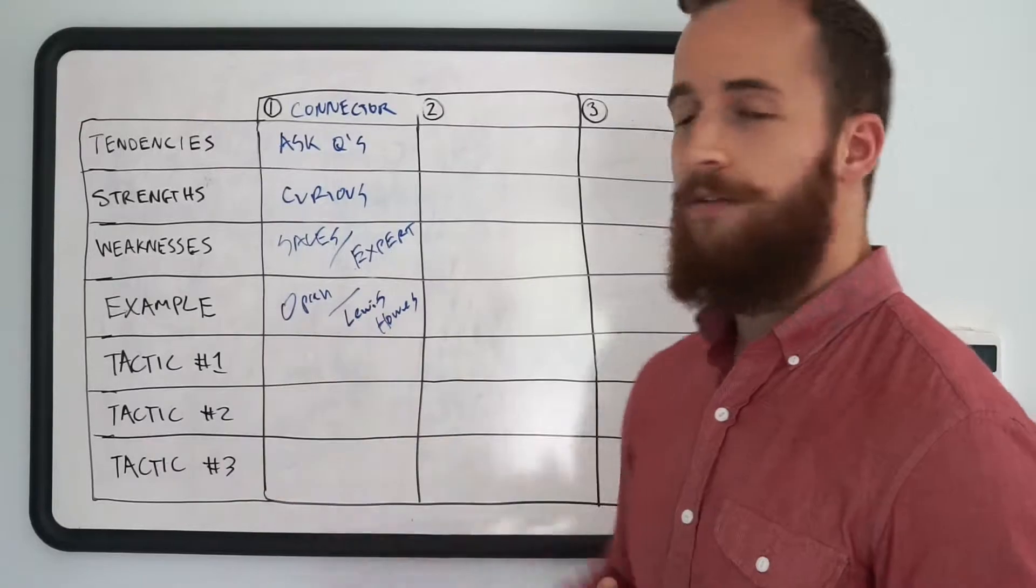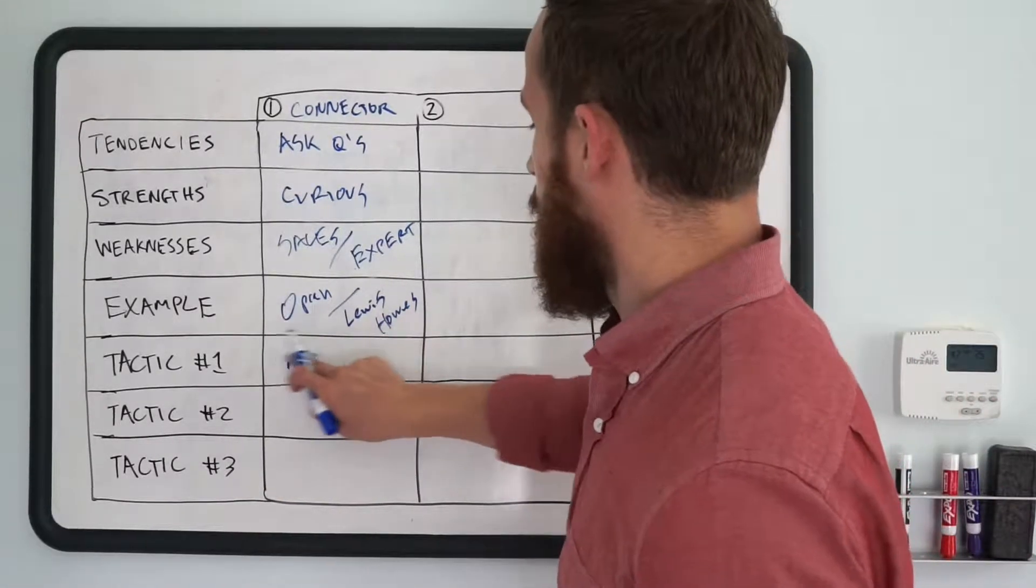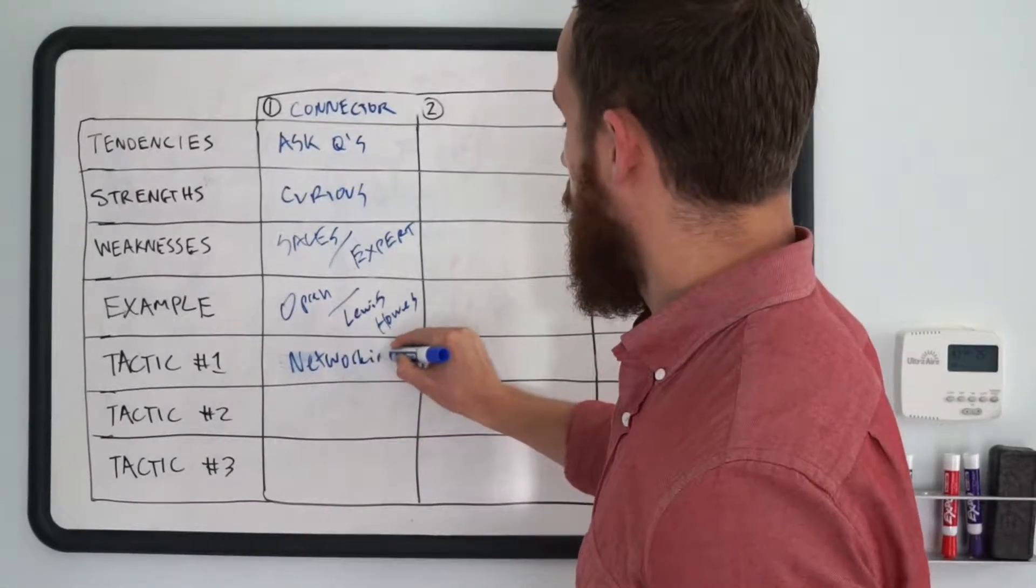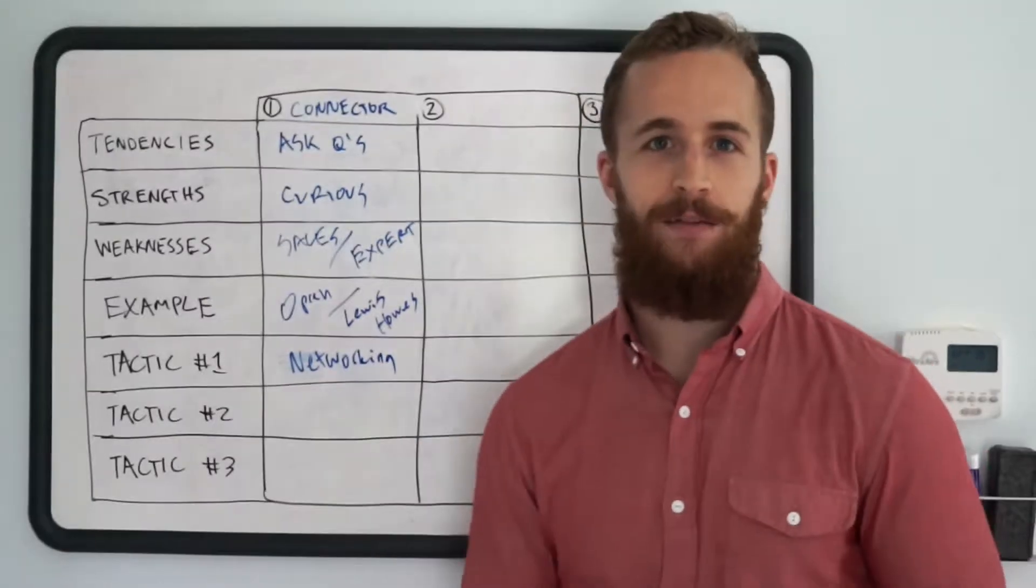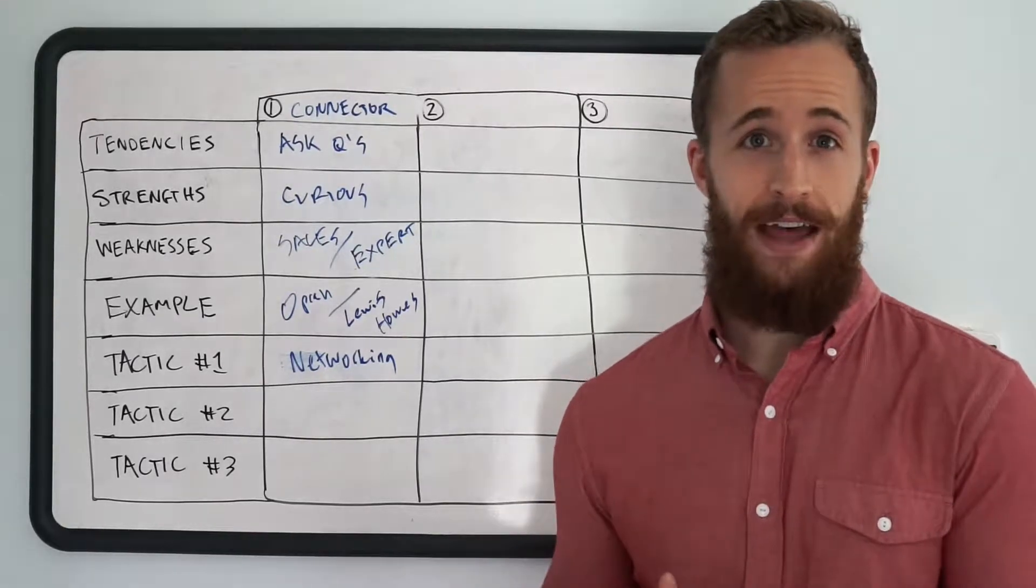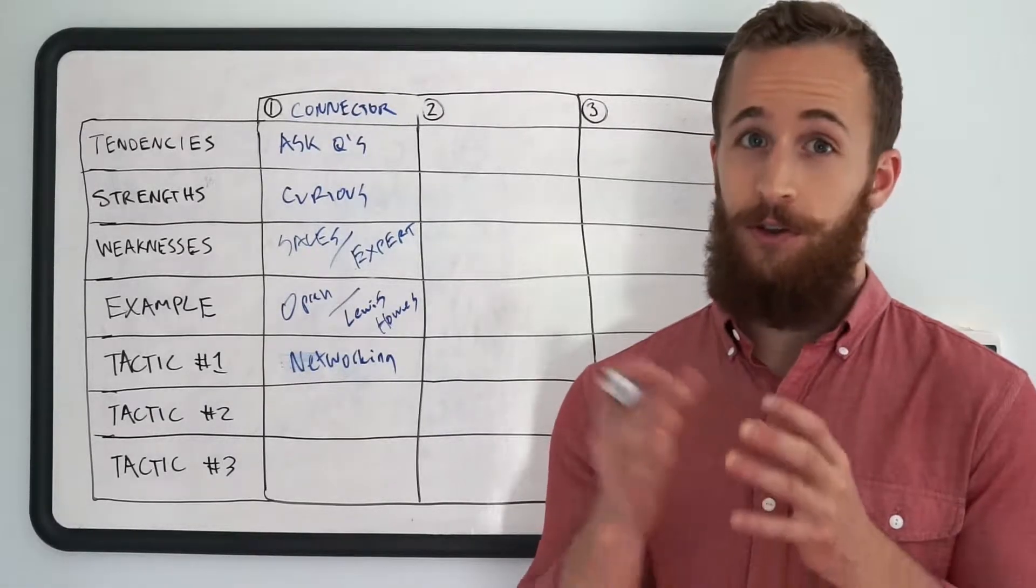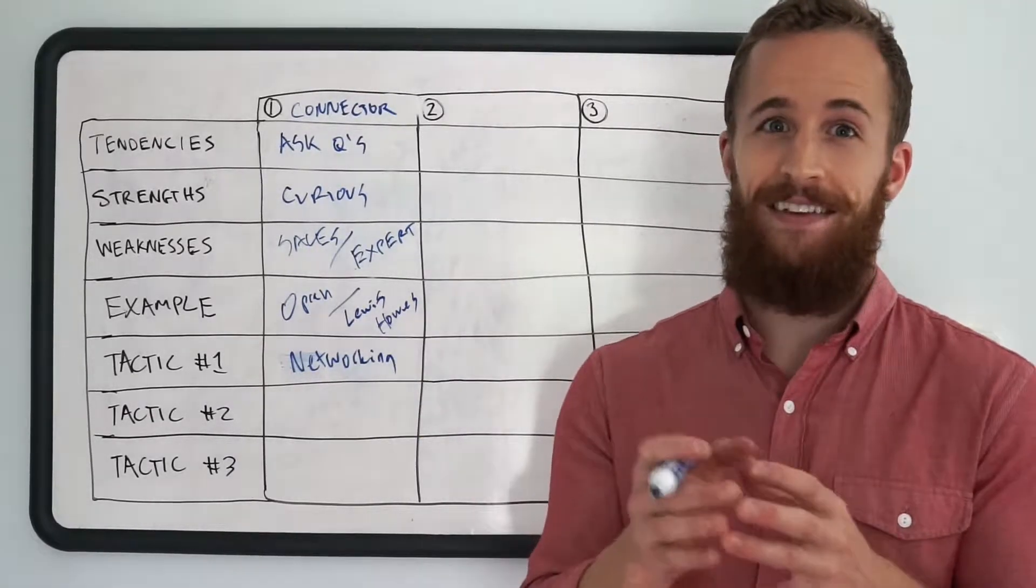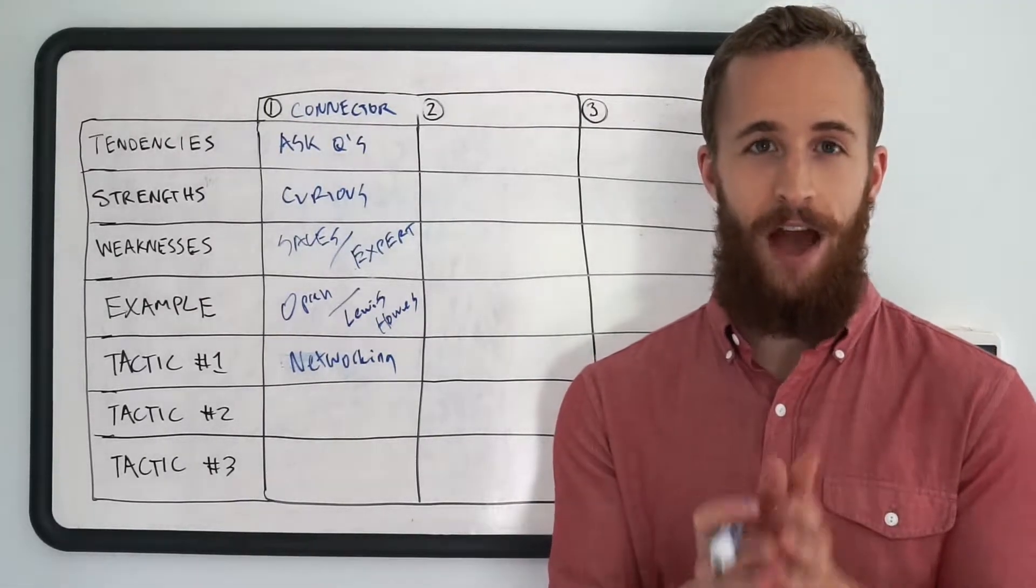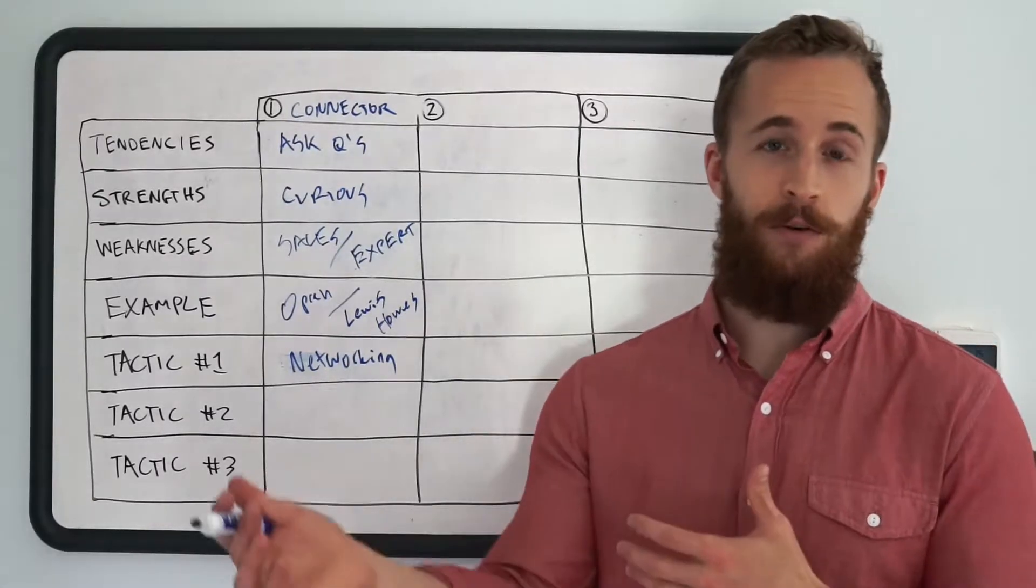Okay, so tactic number one for a connector is networking. All right, so first tactic is networking. That can be in person, online. The best type of networking is typically at paid in-person events that will attract your target audience. So if it's a paid event, it means that they're obviously willing to spend money on this area of their life, and if you know that it caters to the topic that you help with, then you're likely to meet people there who will be a good fit for your coaching or can refer you to others.